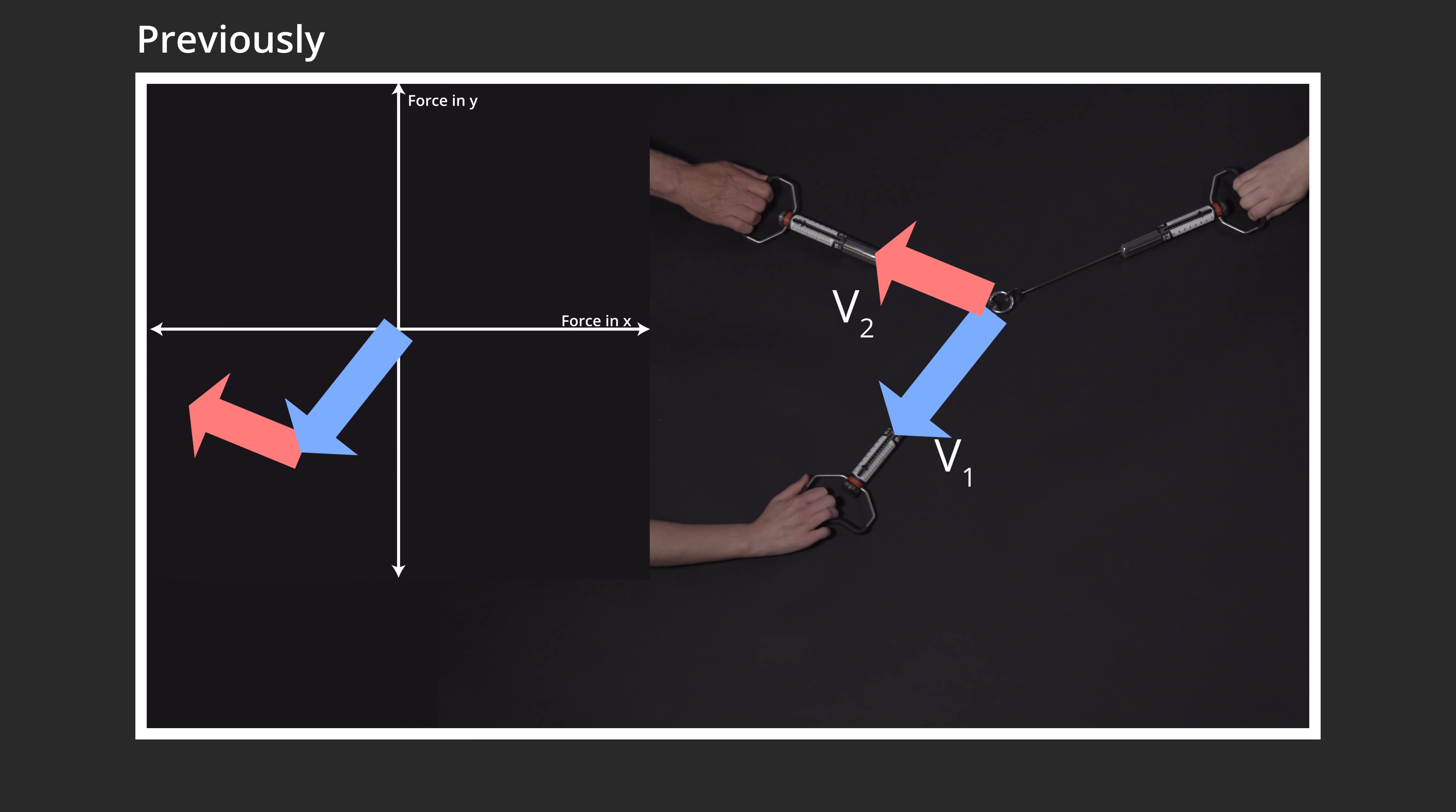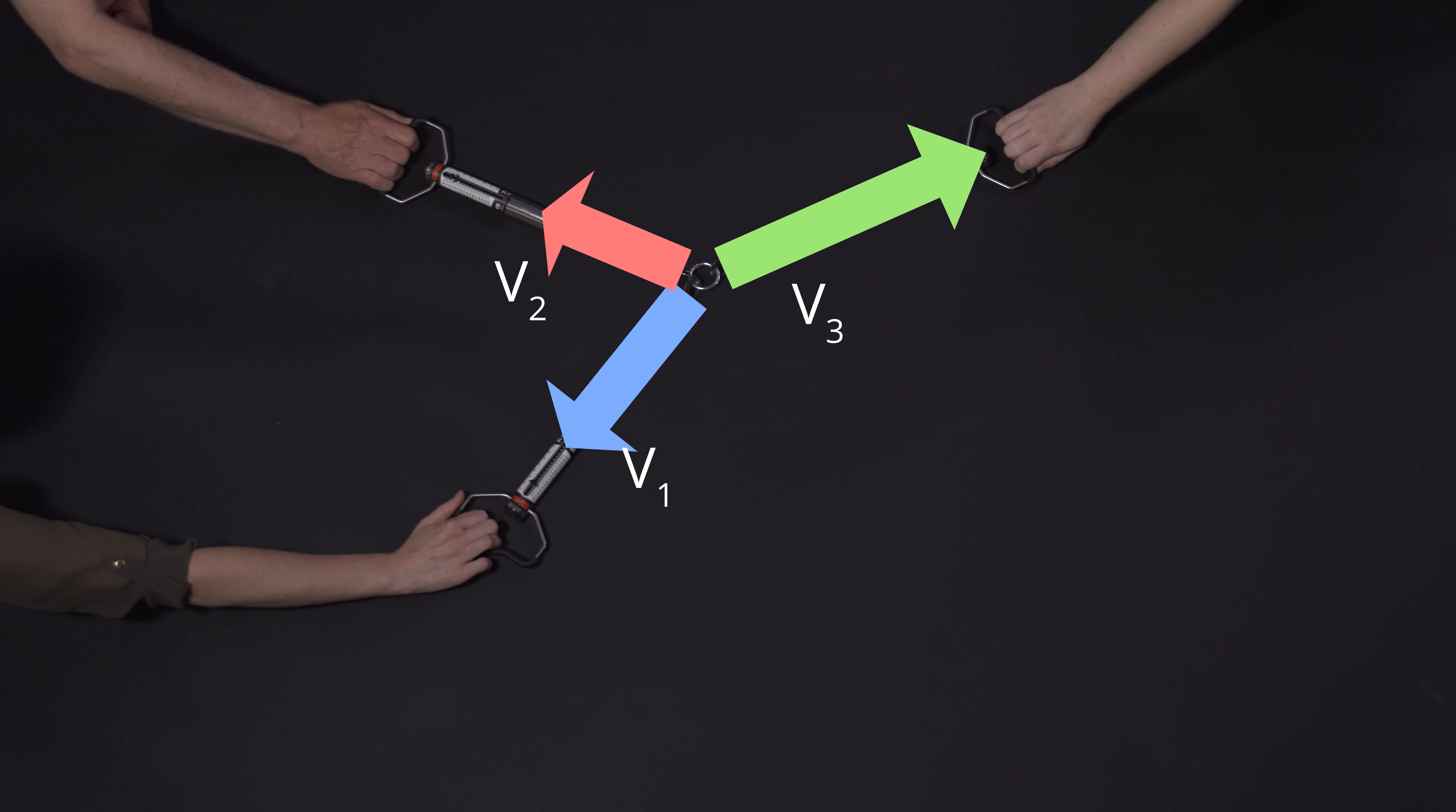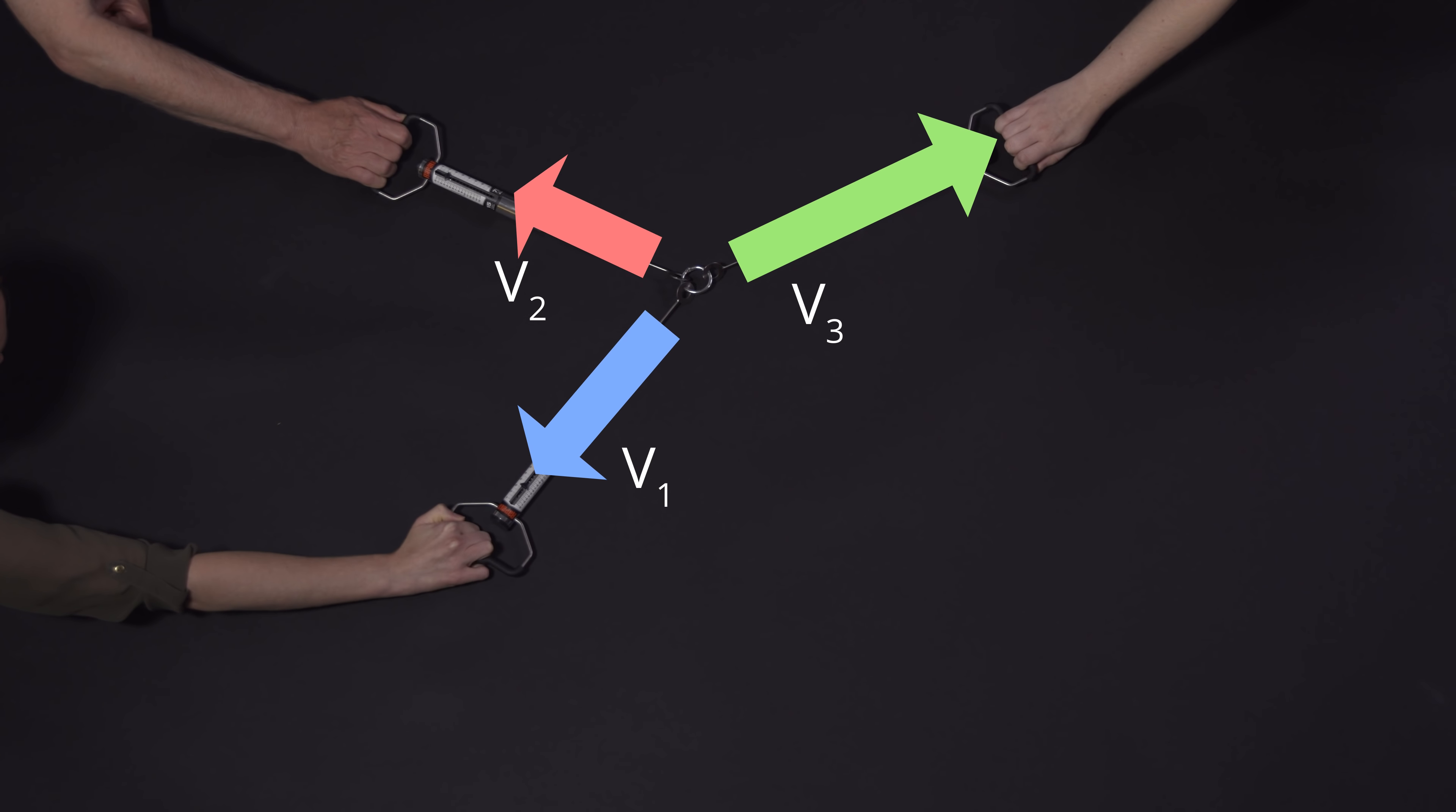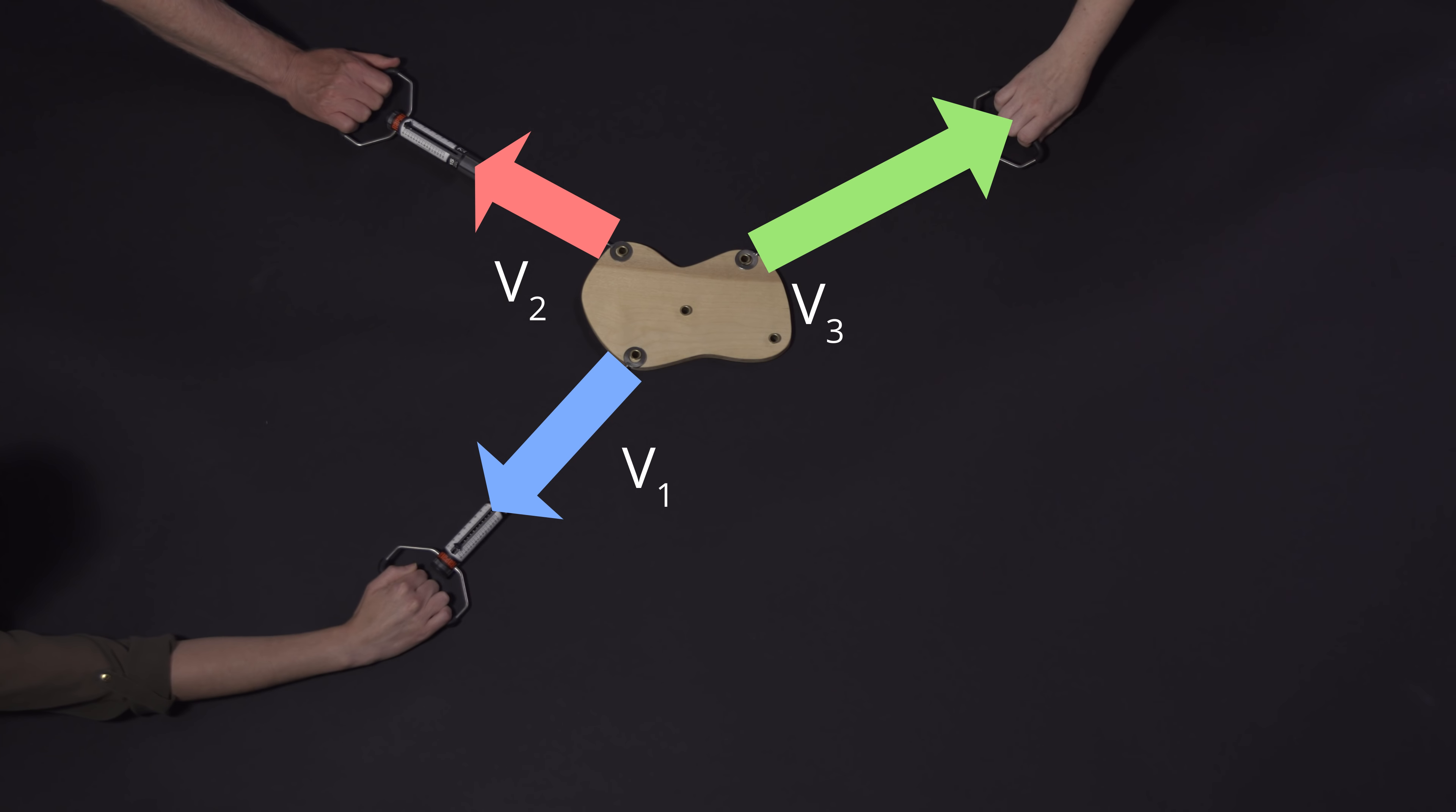In our previous equilibrium video, Forces at a Point, we showed that a point will be in equilibrium if the vector sum of the forces acting on it is zero. If we shift these forces along their own lines of action and apply them to a rigid body, that body will also be in equilibrium.